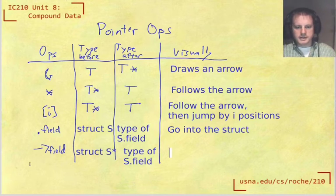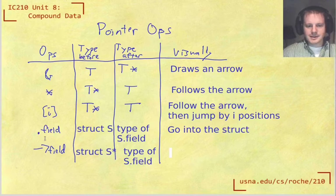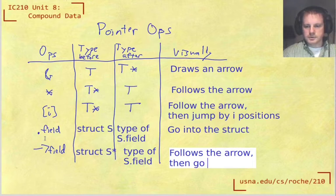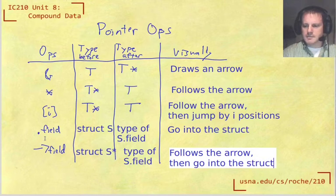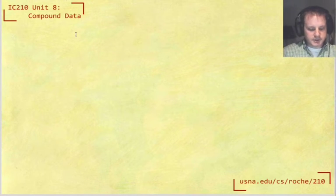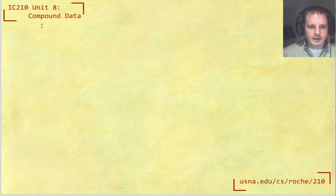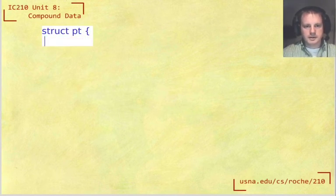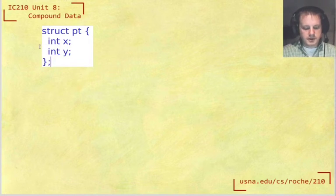And what does the arrow operator really do? It follows the arrow, then goes into the struct. And maybe that's a little bit abstract. So let's think about one concrete example here. I'll make a struct type, a point struct.